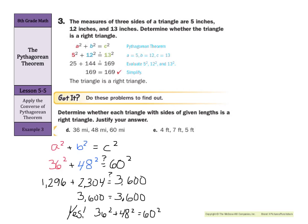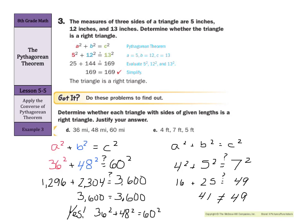Our next one: we have 4, 7, and 5. We have A squared plus B squared equals C squared. Pick the two smallest sides for A and B — those are 4 and 5. The largest must always be C — that's 7. 4 squared is 16, 5 squared is 25, and 7 squared is 49. 16 plus 25 is 41, and that is not equal to 49. So 4 squared plus 5 squared does not equal 7 squared. In D we had a right triangle; in E, we did not have a right triangle.